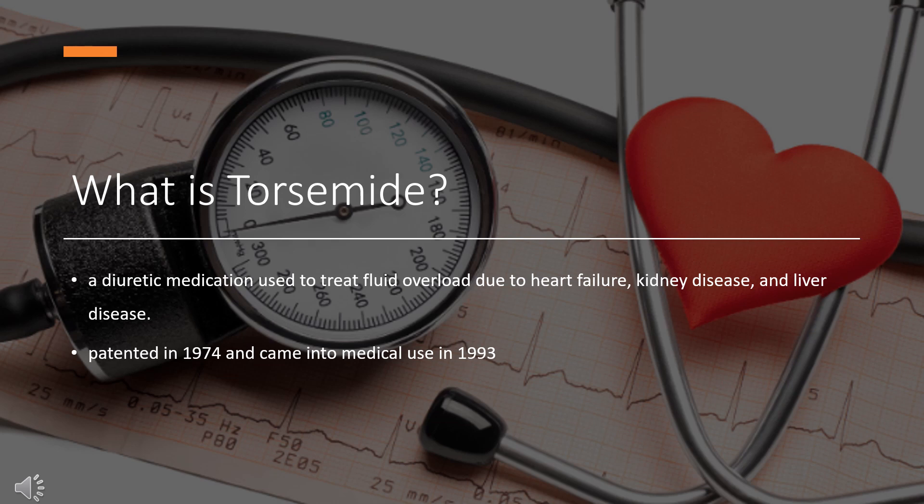It is taken by mouth or by injection into a vein. Torsemide was patented in 1974 and came into medical use in 1993. It is on the World Health Organization's list of essential medicines and is available as a generic medication. In 2020, it was the 213th most commonly prescribed medication in the United States, with more than 2 million prescriptions.